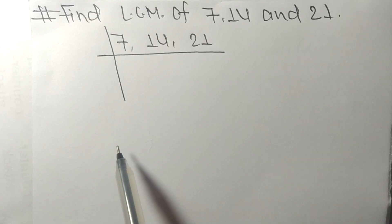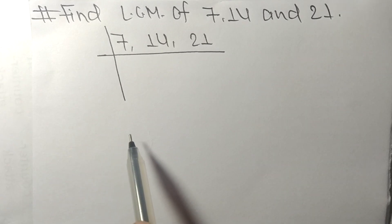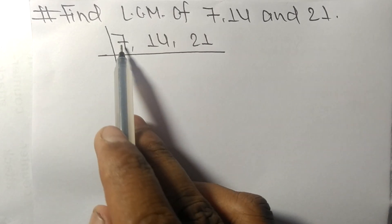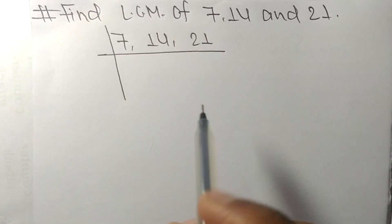To find LCM we have to choose the lowest number which can exactly divide at least any two of these numbers.